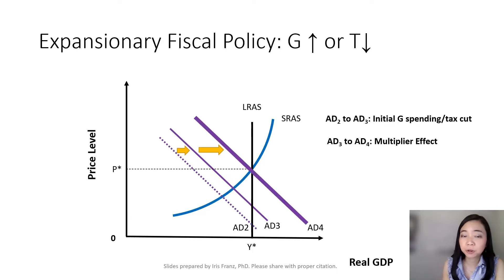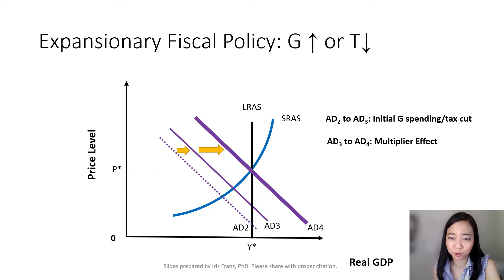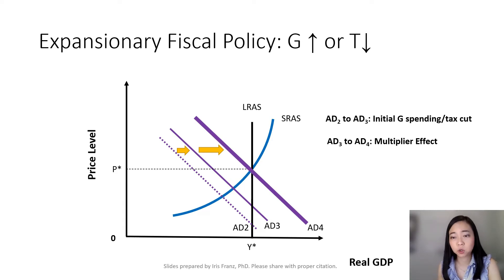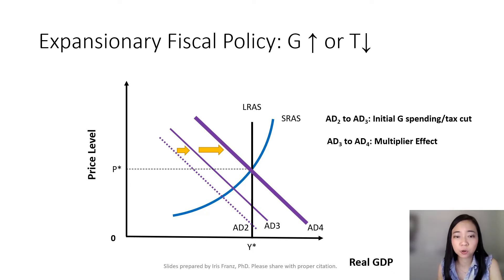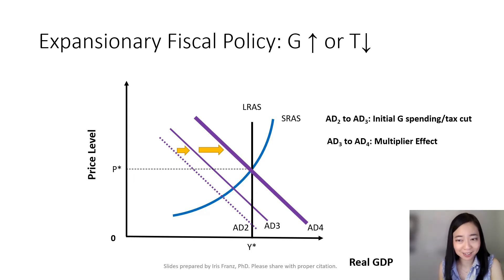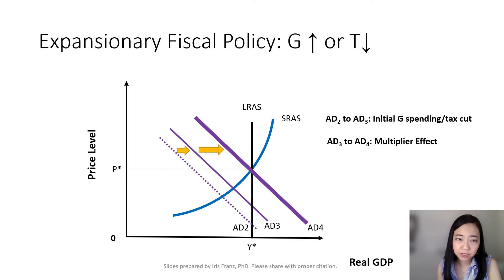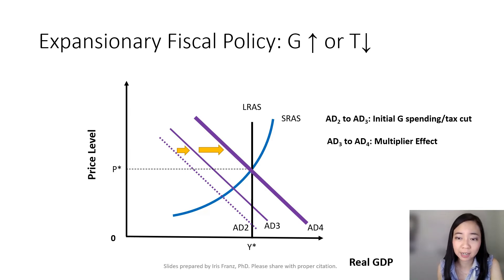With the help of expansionary fiscal policy, our economy is going to be restored to its origin. Government spending is going to increase or the tax is going to be cut. As a result, our aggregate demand curve is going to shift from AD2 to AD3. But that's not the end of it, because the multiplier effect is going to kick in, and that will further shift AD3 to AD4. As a result, our price level and our real GDP will be restored to their original level.